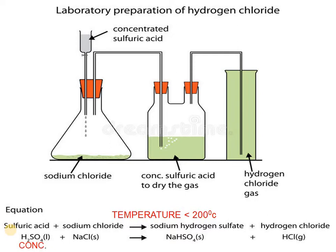We take the sodium chloride solution and add concentrated sulfuric acid dropwise. The gas formed is then passed through concentrated sulfuric acid to dry it — meaning concentrated sulfuric acid is used as the drying agent. The dry HCl gas is then collected by upward displacement of air, because hydrogen chloride is heavier than air.